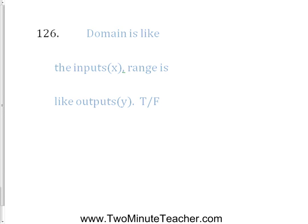Domain is like the inputs, range is like the outputs — that's true. Domain and inputs go together, and range goes with outputs. Domain also goes with x, and range goes with y.